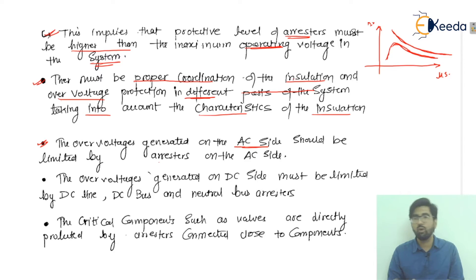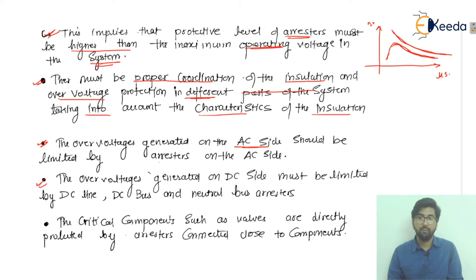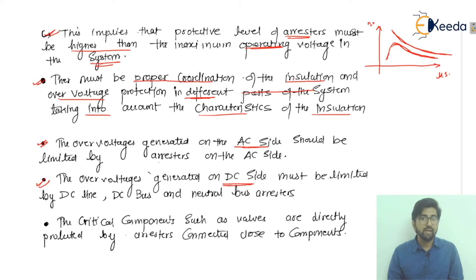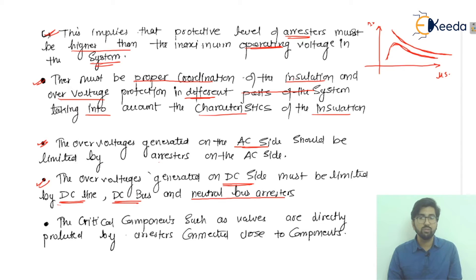If overvoltage is generated on the AC side, it can be limited or permanently removed by the arrestors connected on the AC side. Overvoltage generated on the DC side must be limited by the DC line arrestors, the DC bus arrestors, and the neutral bus arrestors.